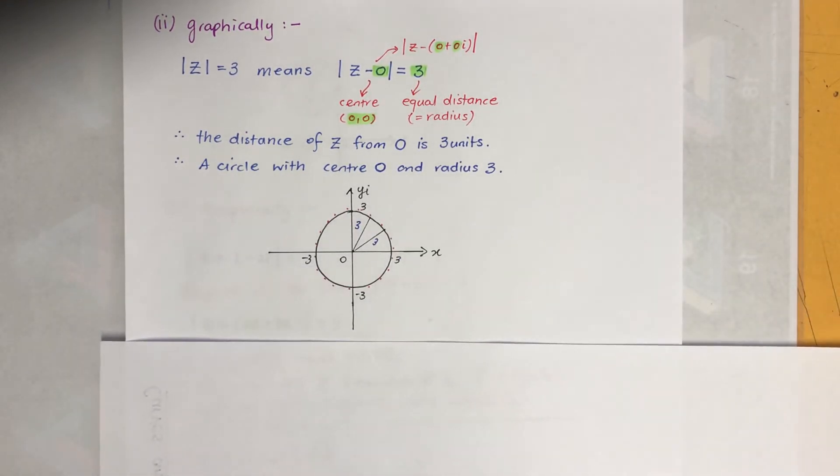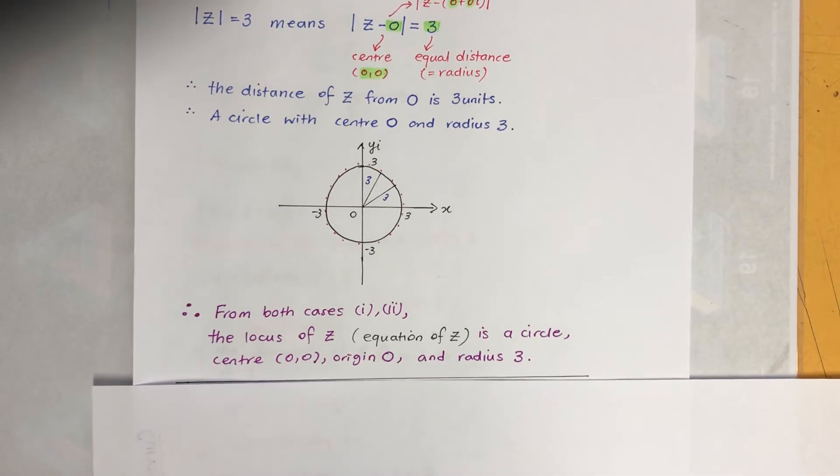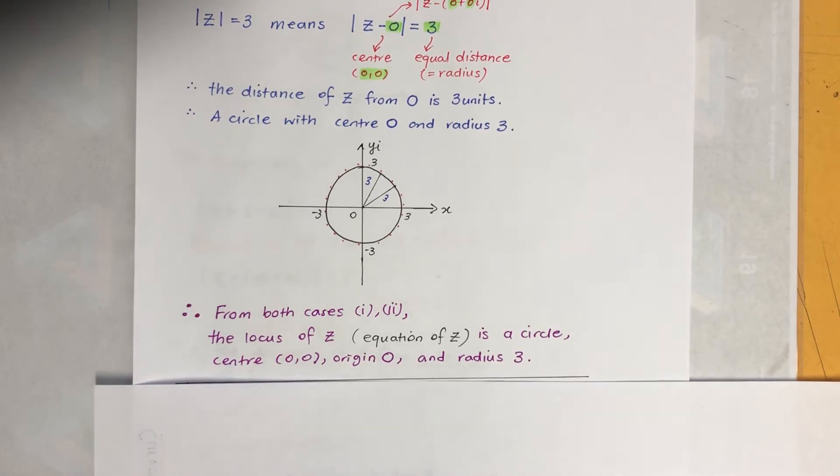That's what it is. So therefore we can say conclusion from both cases, algebraically and graphically, the locus, the equation of the set is a circle with center 0,0 origin and radius 3.